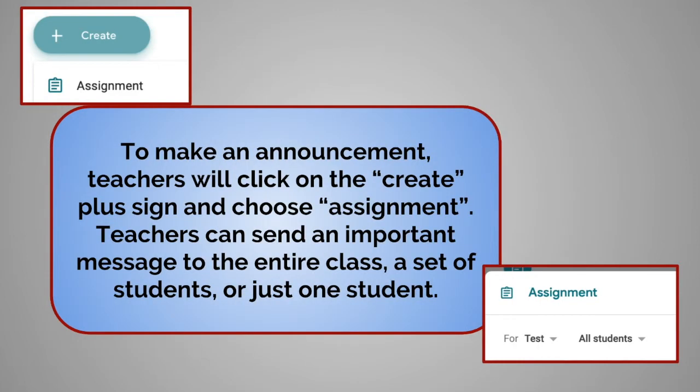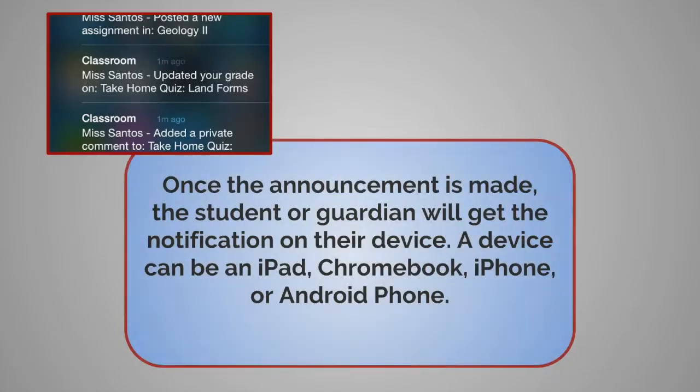Another way to communicate with students is to make an announcement. Teachers will click Create and choose Assignment. Teachers can then make an announcement and have attachments as part of the assignment. From the drop-down menu, teachers can send out to all students, a select group of students, or even one student. Once the announcement is made, the student or guardian will get a notification on their device.